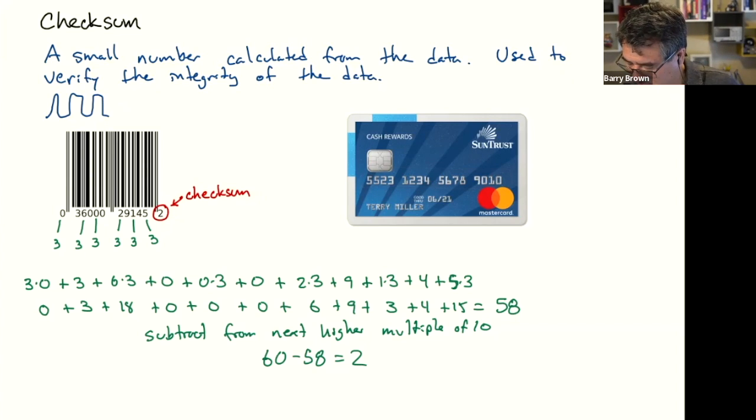That first digit, if it's a four, then it's a Visa. If it's a five, it's a MasterCard. If it's a six, it's a Discover.